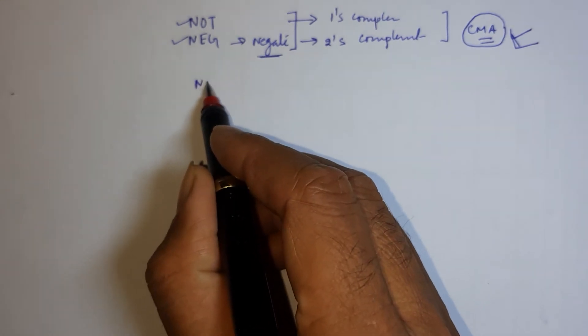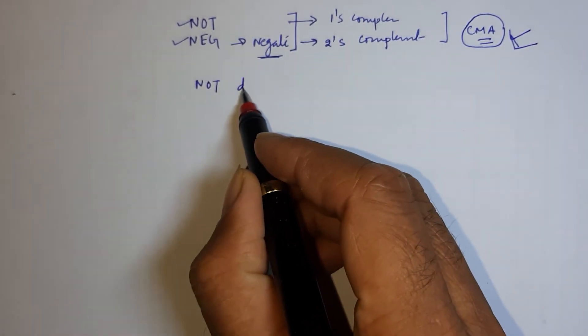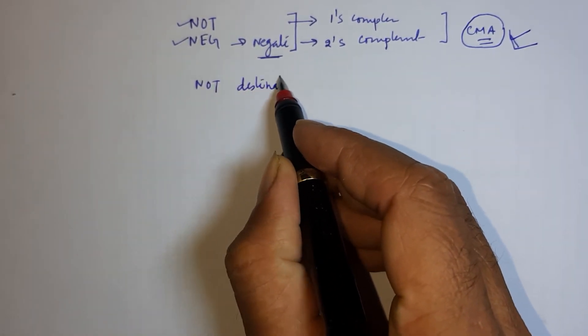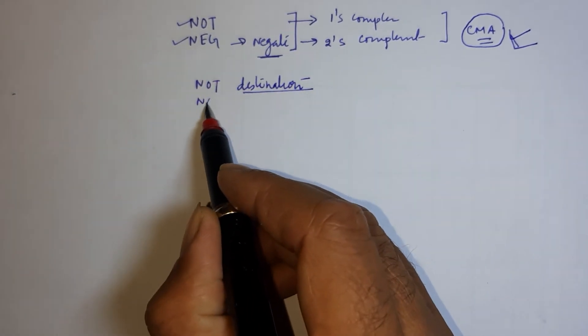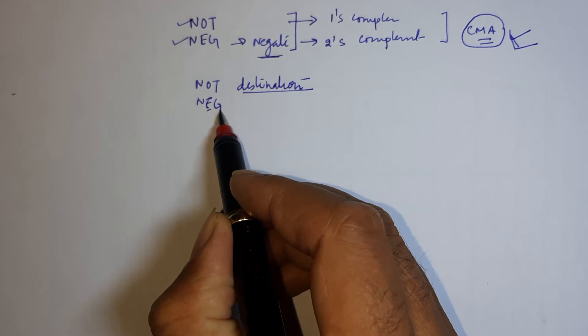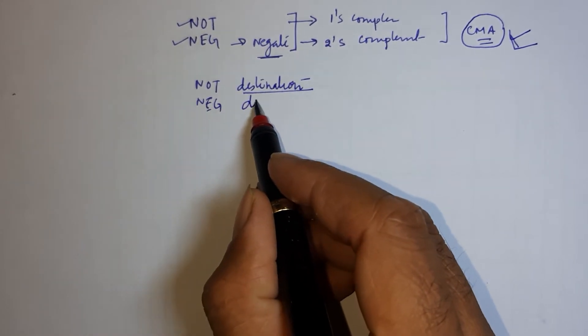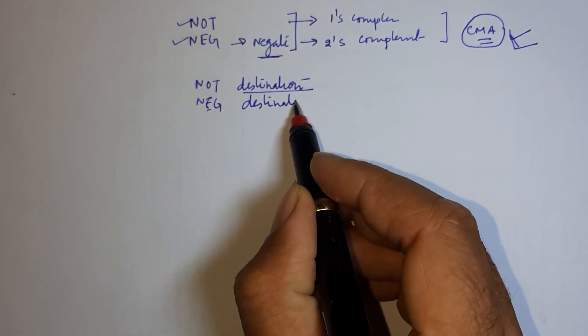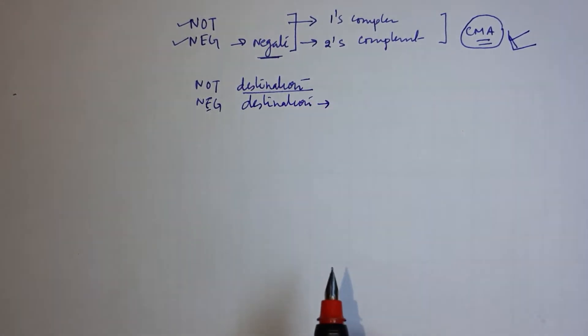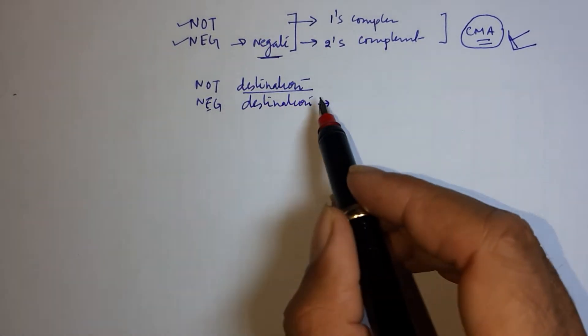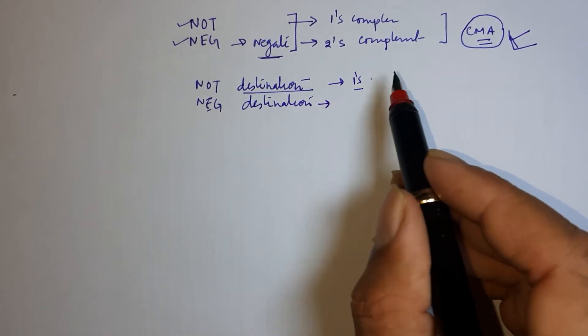So basically, the correct format of NOT is NOT destination, and destination can be any register or memory. So NOT is used for finding one's complement of any number.